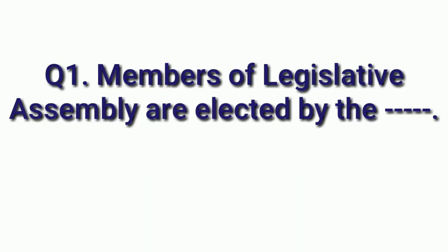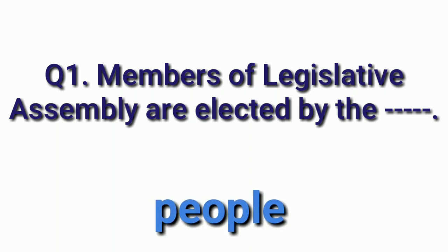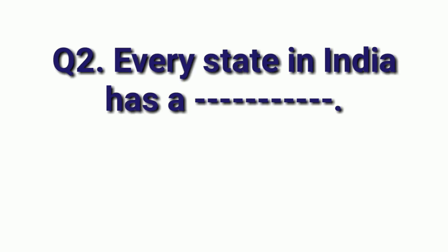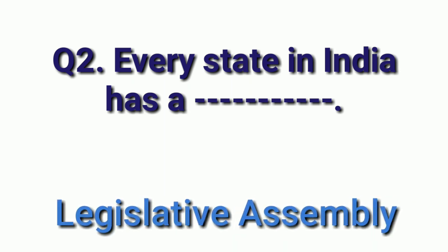First question: Members of Legislative Assembly are elected by the blank. Answer is people. Members of Legislative Assembly are elected by people. Next question: Every state in India has a blank. Answer is Legislative Assembly.